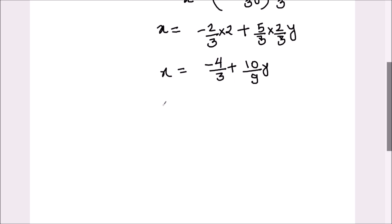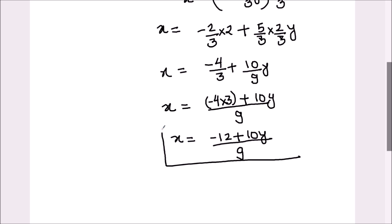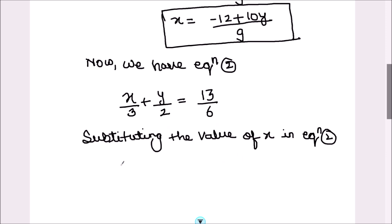Or we can simplify it further by taking the LCM. The LCM will be 9, giving us minus 4 times 3 — 3 times 3 is 9 — so that's negative 12 plus 10, divided by 9. So x equals minus 12 plus 10y upon 9. This is the value of x and we are going to substitute it into equation 2.